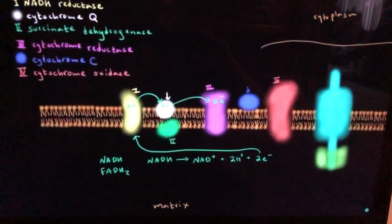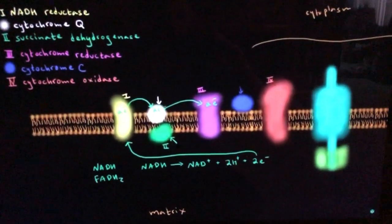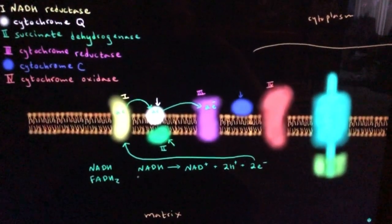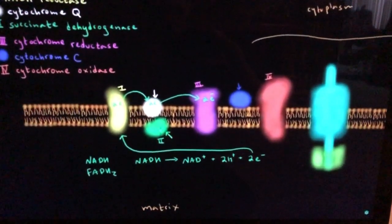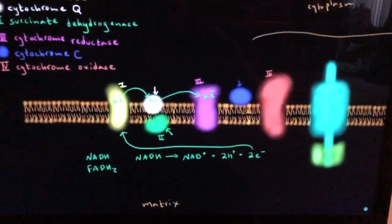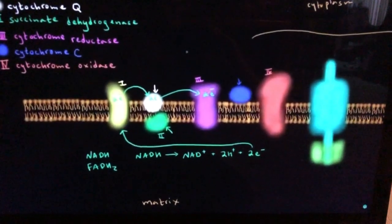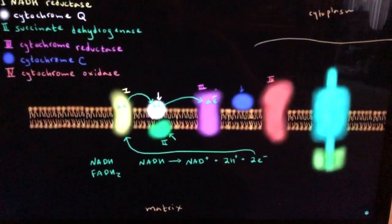And in case you're wondering where this enzyme 2 comes in. So FADH2, when it gets oxidized, its electrons go directly to enzyme 2, from there to cytochrome Q, from there to 3, etc. But anyways, back to what's happening to our NADH.